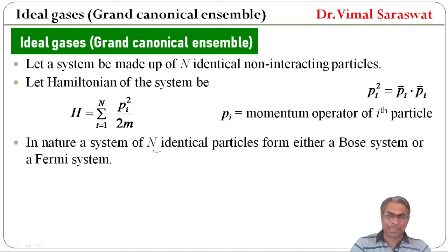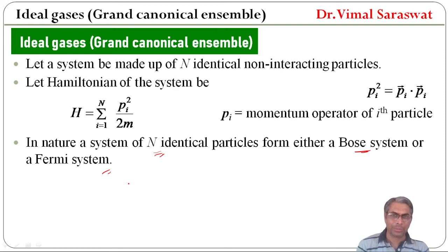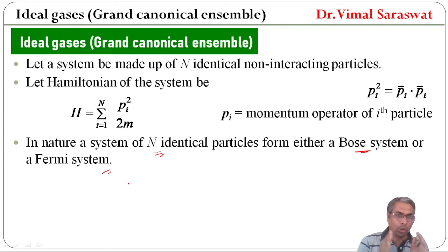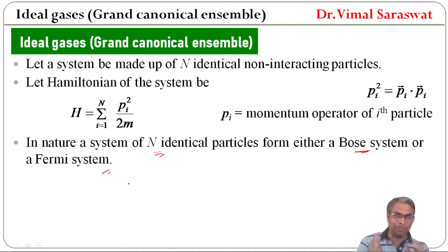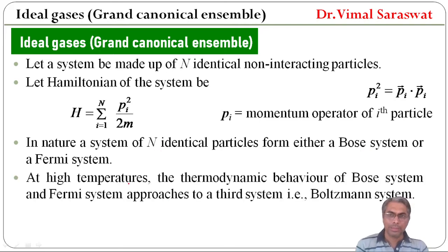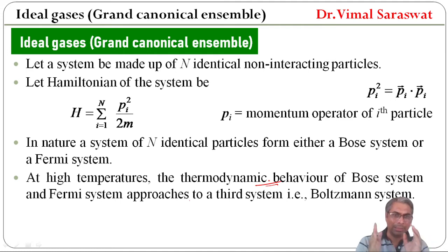In nature, a system of N identical particles forms either a Bose system or a Fermi system. We have already discussed Bose and Fermi systems in ideal gases in the micro canonical ensemble — you can watch that lecture. At high temperature, the thermodynamic behavior of both Bose and Fermi systems approaches a third system, that is the Boltzmann system.